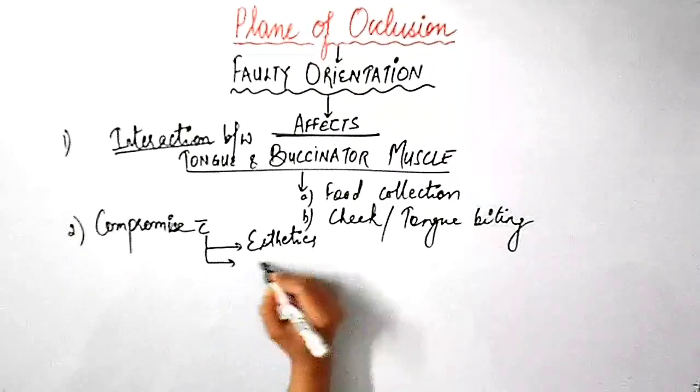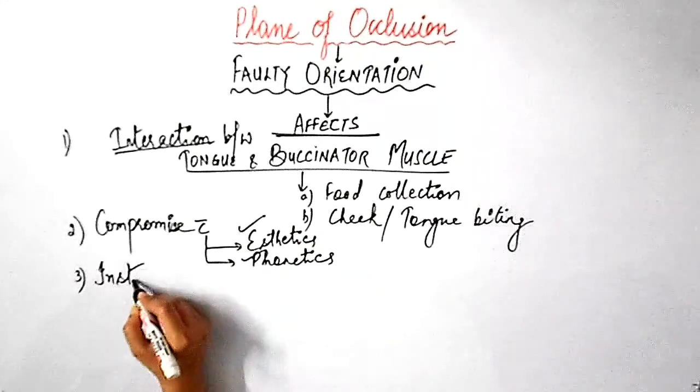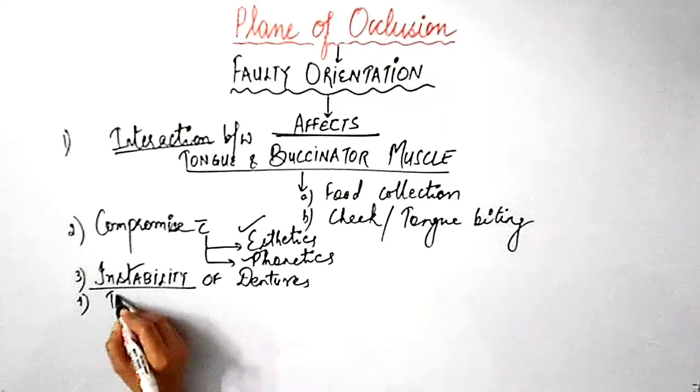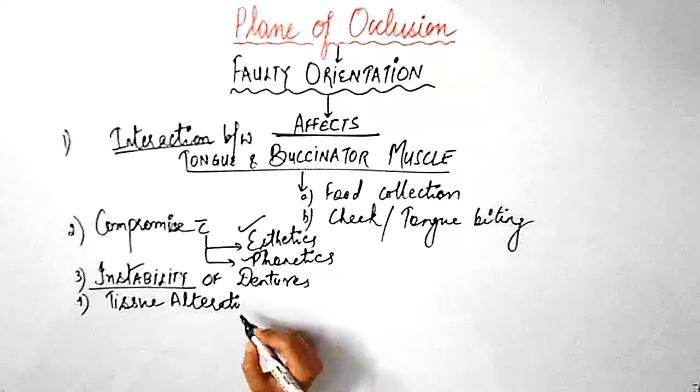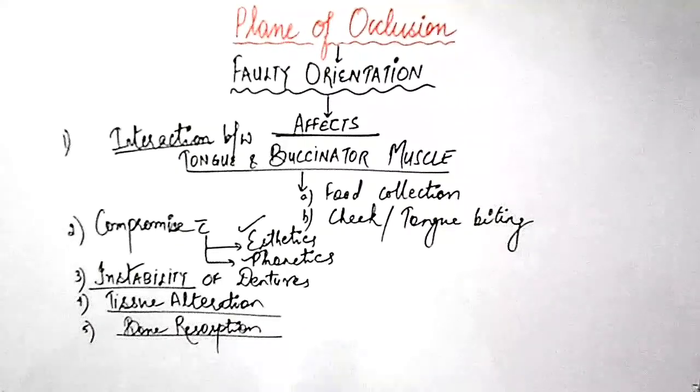And the faulty orientation of the occlusal plane can also result in instability of the dentures. And even tissue alteration can also be seen as a result of the faulty orientation of the occlusal plane and there would be untimely bone resorption.